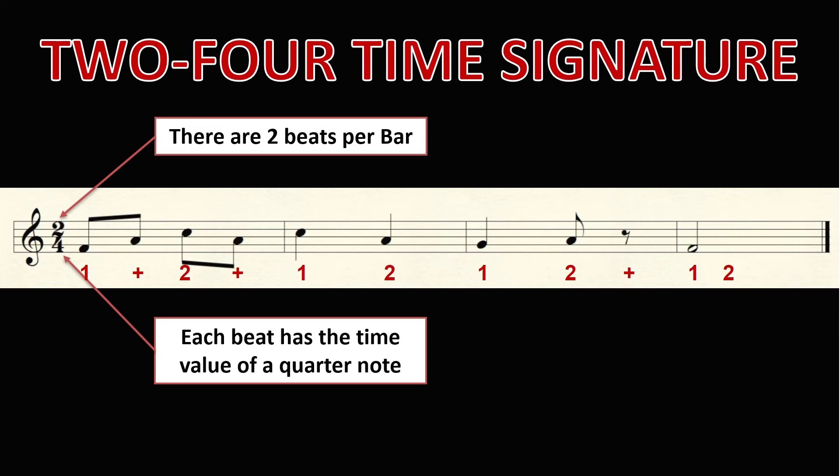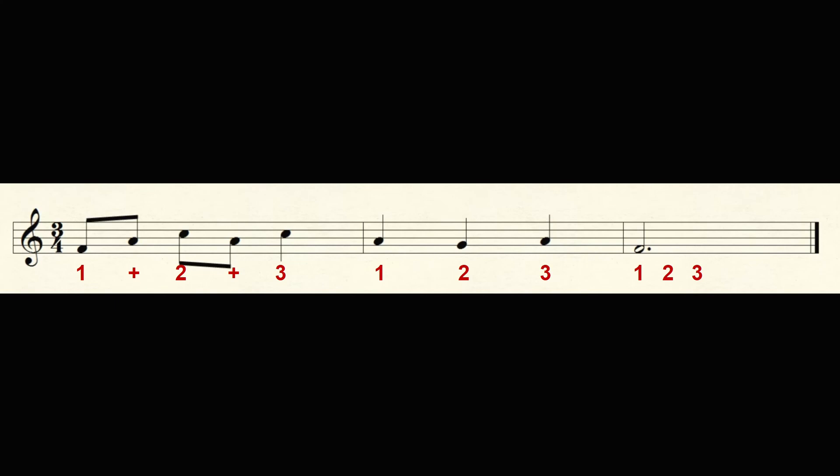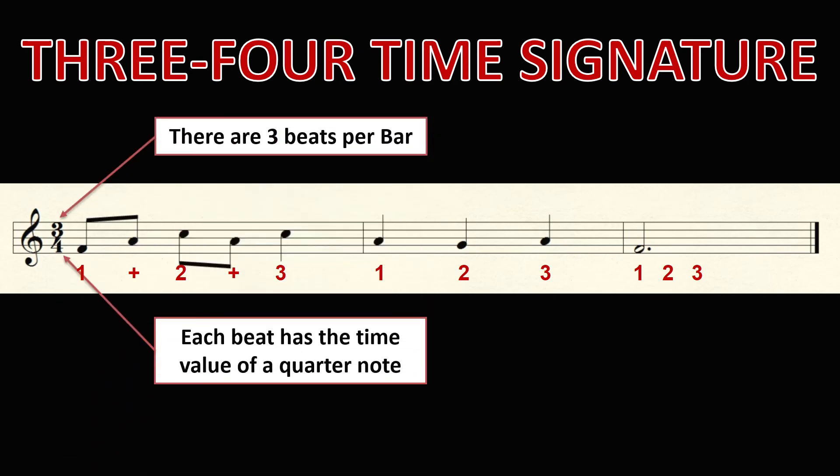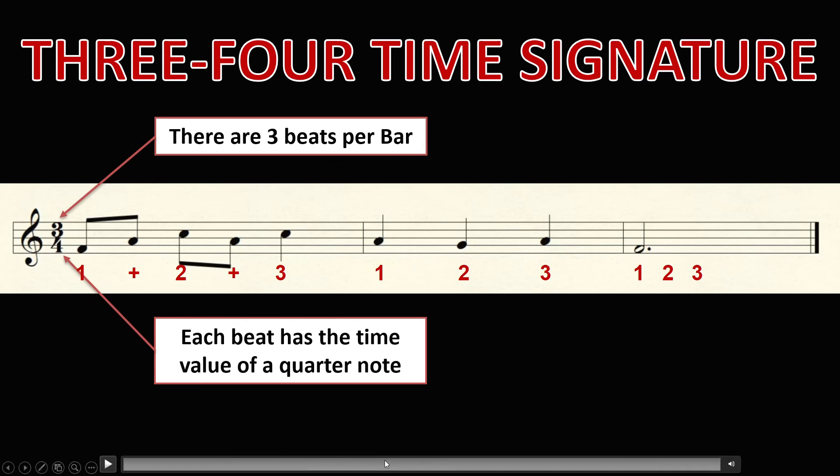This is the 3-4 time signature. The top number 3 tells the musician that there can only be a total of three beats or counts in one bar. And again, the bottom number 4 tells the musician that each beat has the time value of a quarter note. Practice counting as you play the notes in our example with the 3-4 time signature.